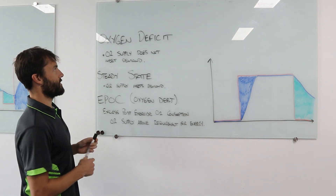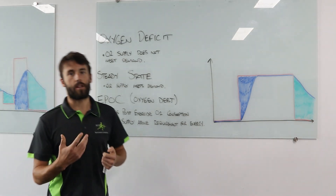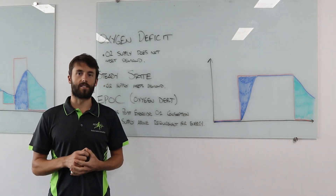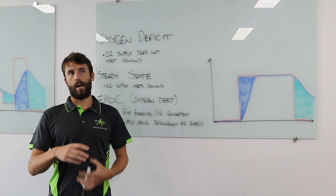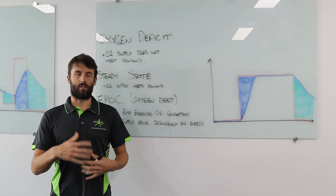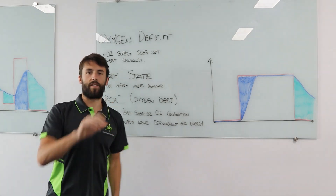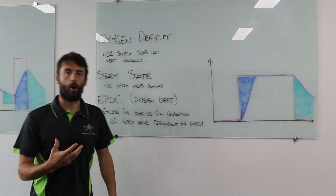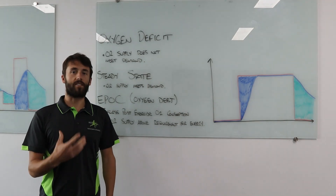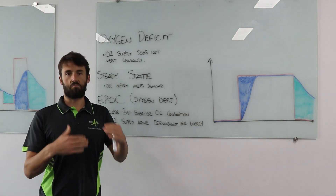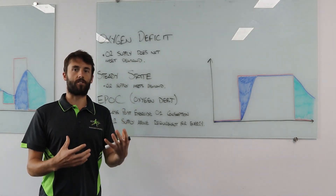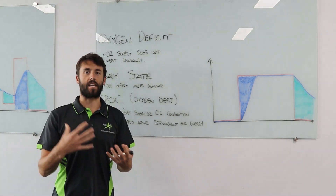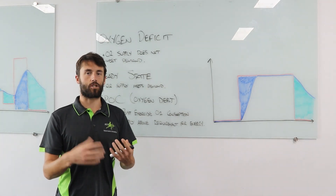The term Oxygen Deficit simply means that the oxygen supply does not meet oxygen demand. Steady State would then refer to oxygen supply meeting demand. Our body needs a certain amount of oxygen to do the work it's doing, and at the moment it's getting the right amount — that's good.